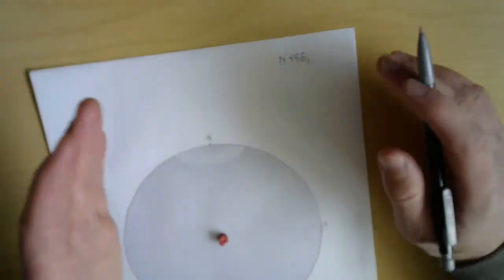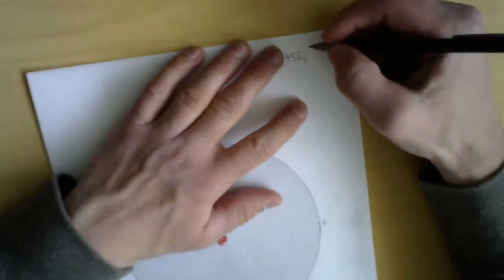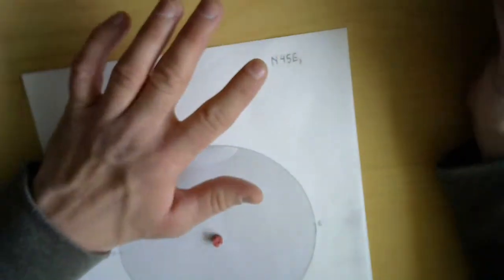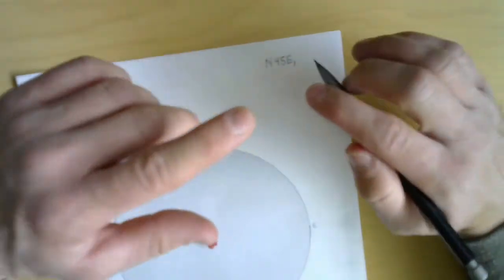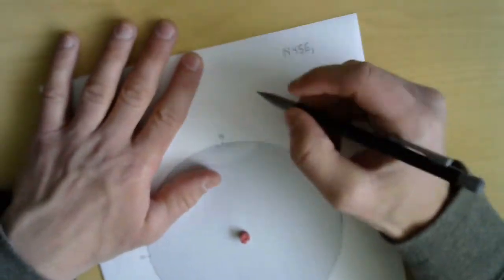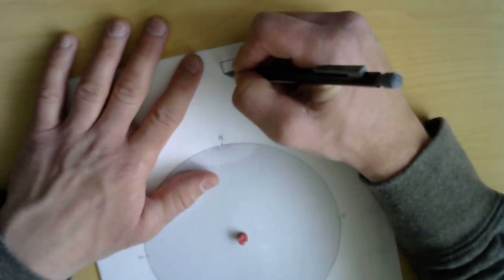We're going to do north 45 east for the strike, and then the dip, when we're doing right hand rule, is always going to be 90 degrees to the right from strike, at least the quadrant that the dip is in. Normally when you see dip, you just see the amount of dip, so the deviation.